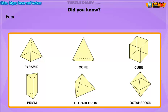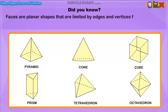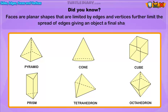Faces are planar shapes that are limited by edges and vertices. They further limit the spread of edges, giving an object a final shape. Given below are some solid shapes that have faces, edges, and vertices.